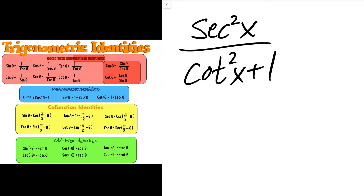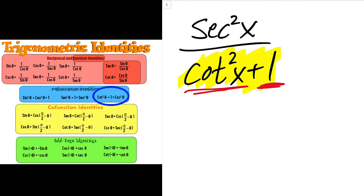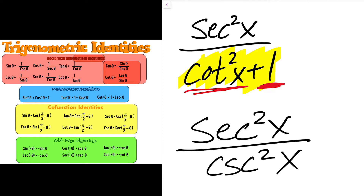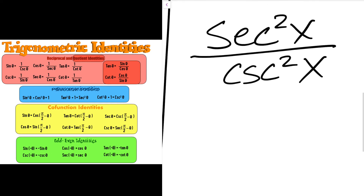Let's see what we can simplify in this problem. My eyes are drawn to the denominator — anytime I have a trigonometric function with plus 1, that's usually indicative of a Pythagorean identity. I go to my Pythagorean identities and I notice that cotangent squared x plus 1 is an identity, so I can simplify. My new problem becomes secant squared x over cosecant squared x.